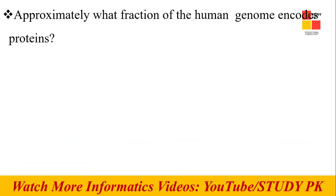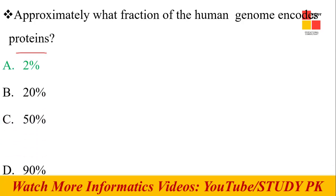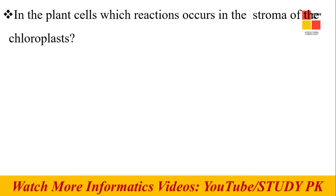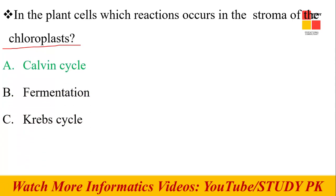Next question: Approximately what fraction of the human genome encodes proteins? About 2% is the right answer. Next question: In plant cells, which reaction occurs in the stroma of the chloroplast? The Calvin cycle. The Calvin cycle is the right option.